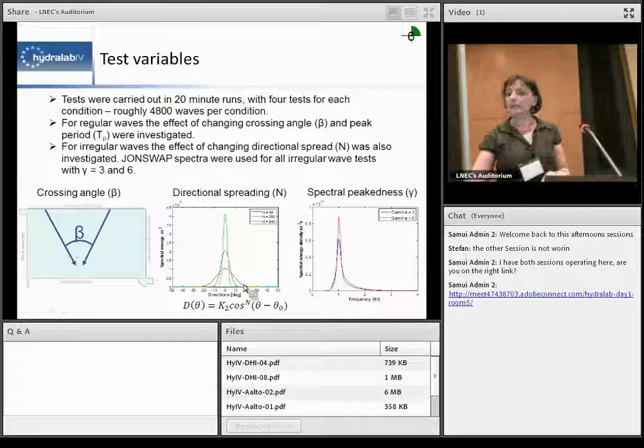And here we have different directions, different crossings from zero which is actually just kind of multiplying the same case to 10, 20, 30 and 40 degrees. So if you just concentrate here in this talk about irregular test.